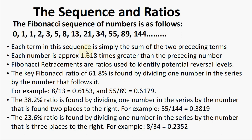Fibonacci retracements are ratios used to identify potential reversal levels. The key Fibonacci ratio of 61.8 — we call it the golden ratio — which is found by dividing one number in the series by the number that follows it. So this 0.618 is discovered by dividing one number in the series by the number that follows it. So divide 2 by 3, 5 by 8, 13 by 21, 21 by 34, you will get approximately 0.6153.